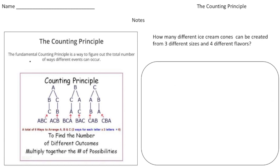All right, actually, I gave you the definition right over here, so why don't you underline that. The Counting Principle is a way to figure out the total number of ways different events can occur. All right, so let me just give an example.